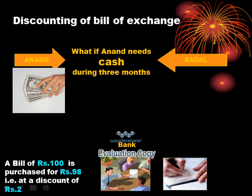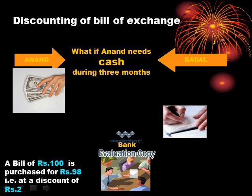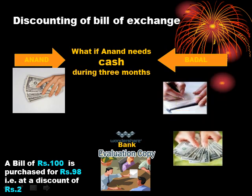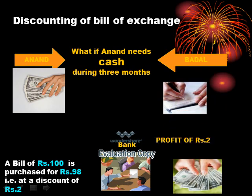Now the question is what will the bank do with this bill? After 3 months are over, bank will give 3 more days to Mr. Badal to make a payment. These 3 more days given to Mr. Badal for making payment in addition to those 3 months of the bill is called 3 days of grace. So bank will present the bill to Mr. Badal after 3 months and 3 days, and Mr. Badal will pay Rs.100 to the bank. In this transaction, the bank has earned a profit of Rs.2.